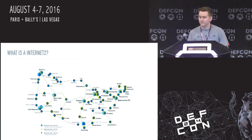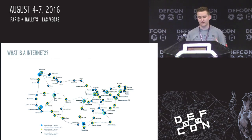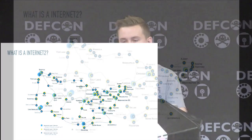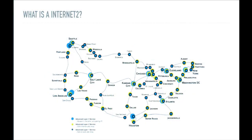Internet 2 was mainly developed for sharing research and technologies between universities. I get really excited when I see something like this because these are additional routing paths between each of the nodes on this network. Internet 2 has been around since 1997 and a lot of people didn't really care about security back then. So there's a whole lot of risk here — these routing paths might be trusted or not even considered by some security teams because they've been around for so long.